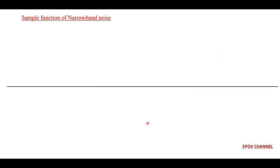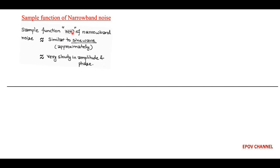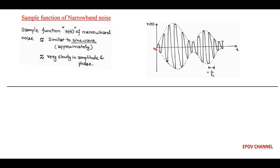The sample function of the narrowband noise, n(t), is approximately similar to a sine wave and varies very slowly in amplitude and phase — just like an envelope, as shown in the figure. Since n(t) is narrowband noise which is random in nature, we call it a narrowband process denoted by capital N(t).